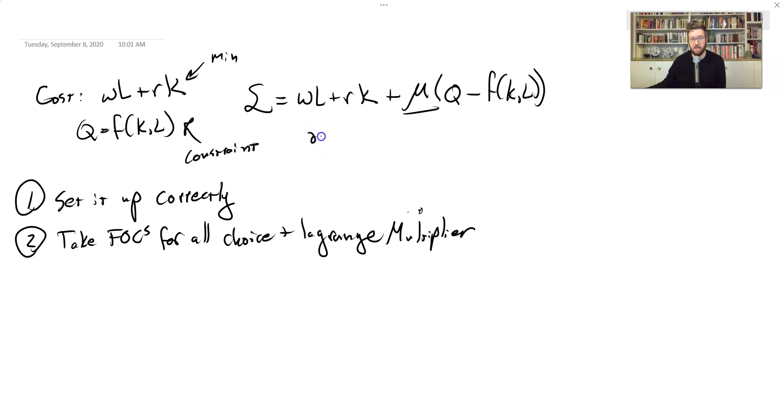So we would have something like derivative with respect to L. The derivative of the cost function part of that is just W. And then plus mu times Q. There's nothing in there, no L's that we see, minus the partial derivative of this with respect to L. The next one is going to be with respect to K. It's the same, except we have an R. And we have the partial derivative with respect to capital. And then we have to do that Lagrange multiplier too. And that one's easy because there's no exponent or anything funny about that. It's just multiplied by this term here.